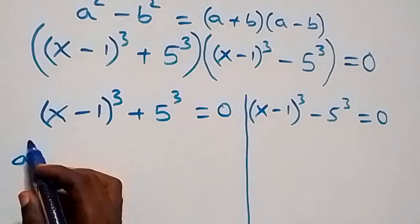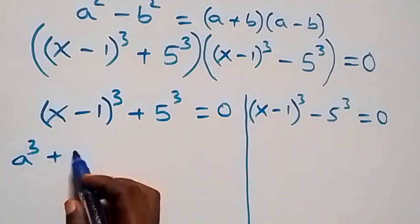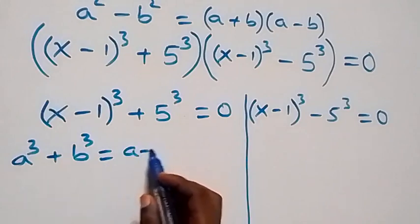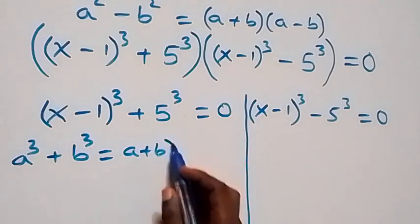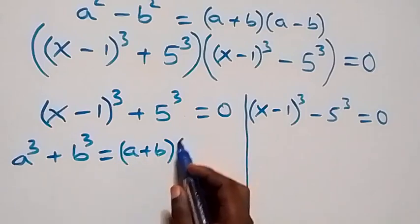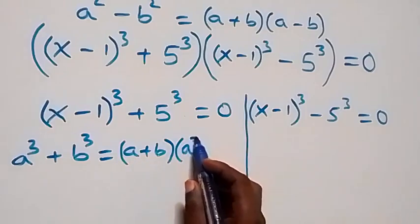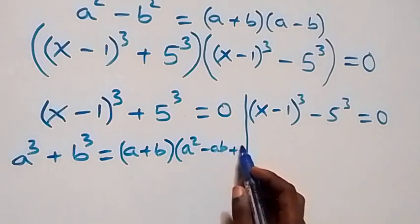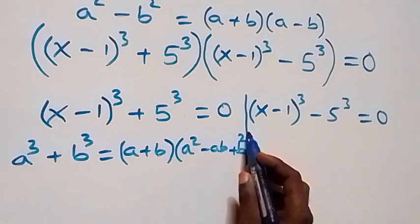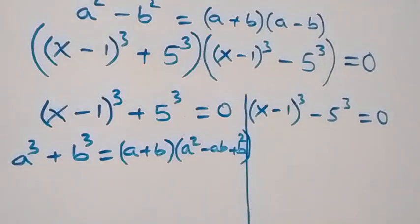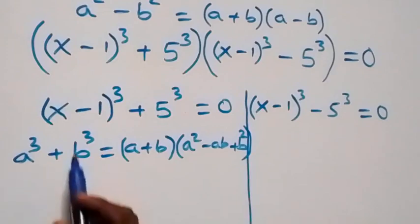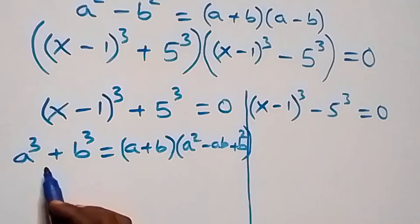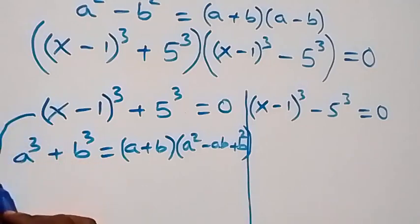For the first case, this follows from sum of two cubes: a cubed plus b cubed equals a plus b, into bracket a squared minus ab plus b squared. Here x minus 1 serves as a, and 5 serves as b.